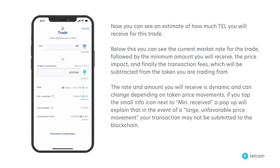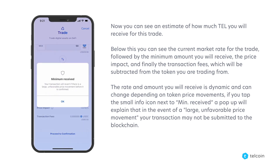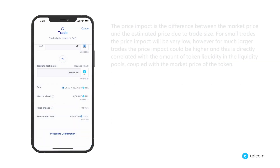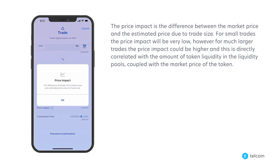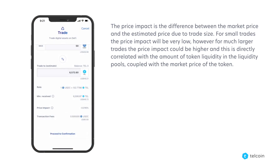If you tap the small icon next to Min Received, a pop-up will explain that in the event of a large unfavorable price movement your transaction may not be submitted to the blockchain. The price impact is the difference between the market price and the estimated price due to trade size. For small trades the price impact will be very low, however for much larger trades the price impact could be higher, and it is directly correlated with the amount of token liquidity in the liquidity pools coupled with the market price of the token.